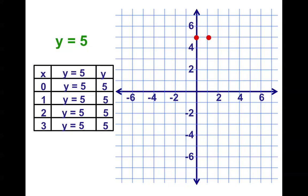There's 0, 5. There's 1, 5. 2, 5. And 3, 5. They do all line up. And they go perfectly flat. Yes, there is a pattern there.